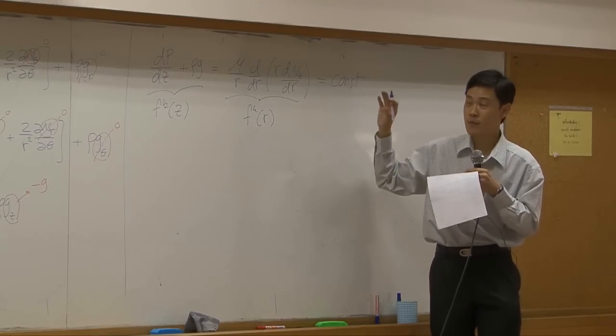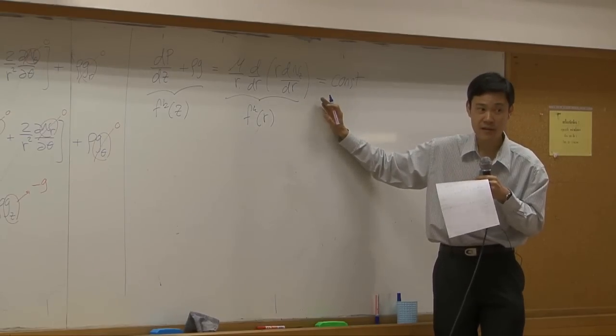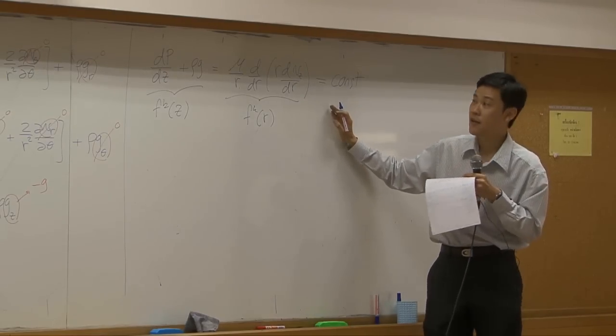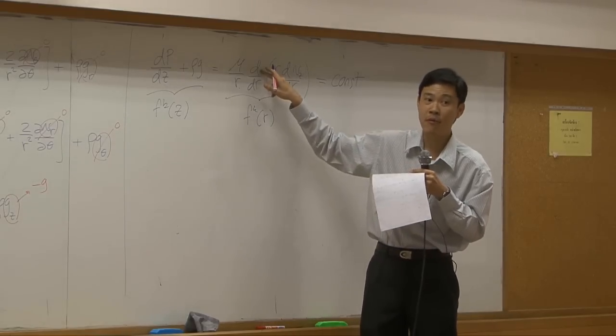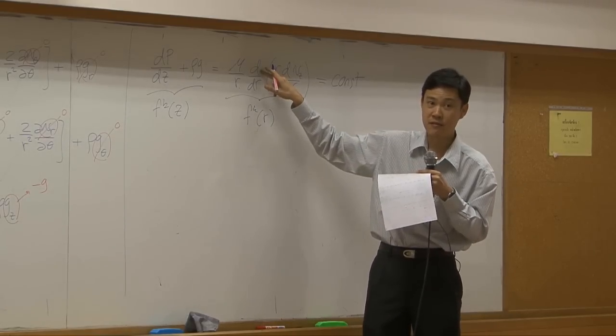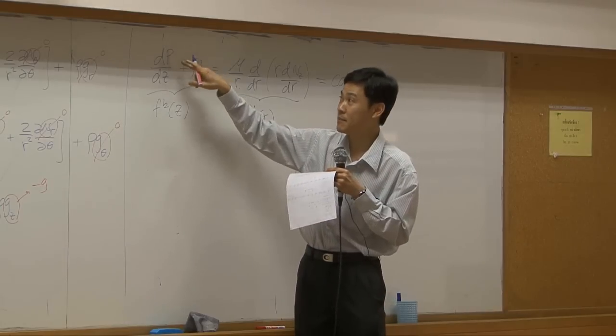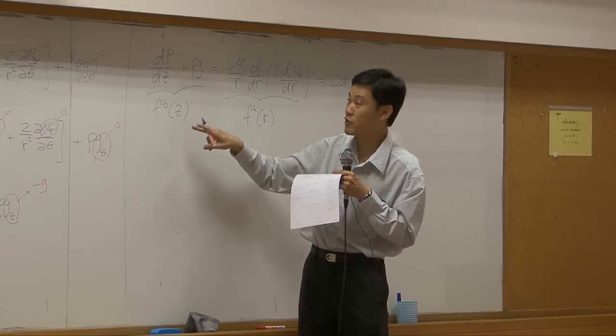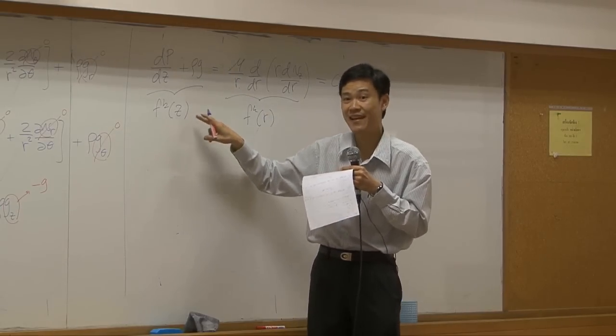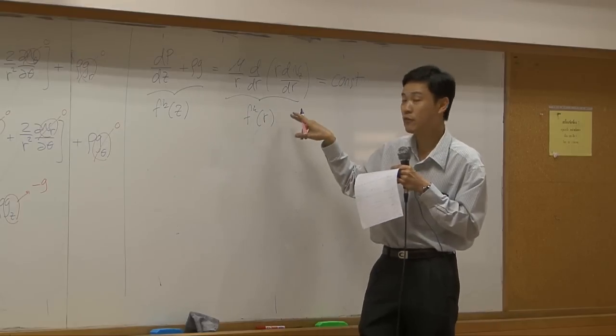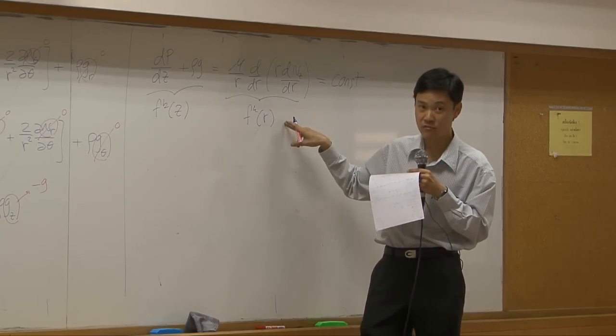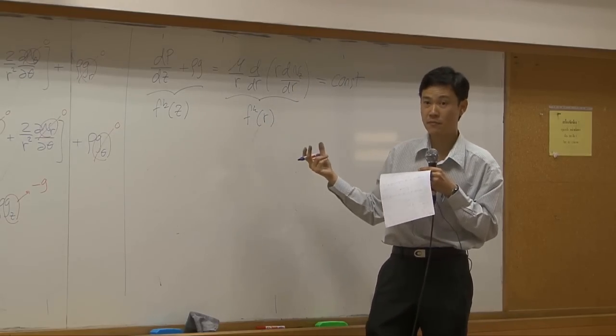However, remember, this trick here cannot be used if this one is partial differentiation. Because if it is partial, then it means pressure here changed with respect to both Z and R. Here, change with respect to both Z and R as well. They can be equal, okay?